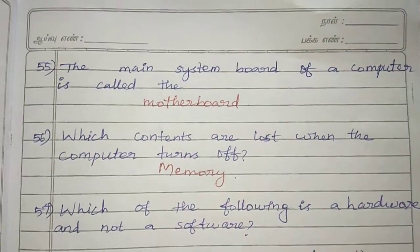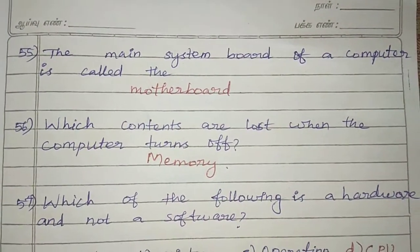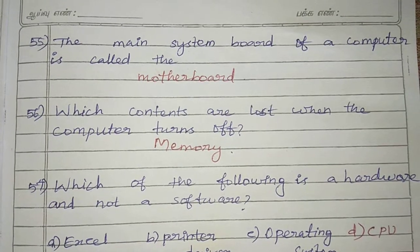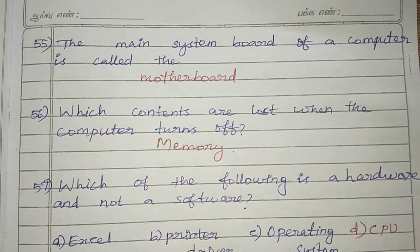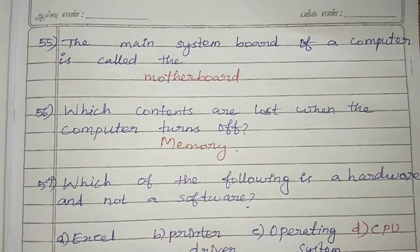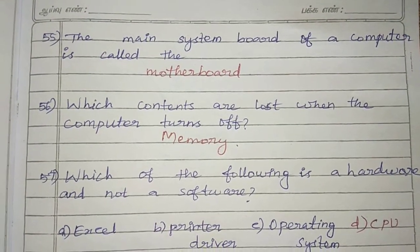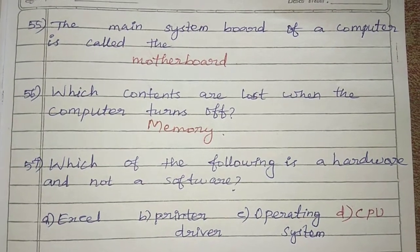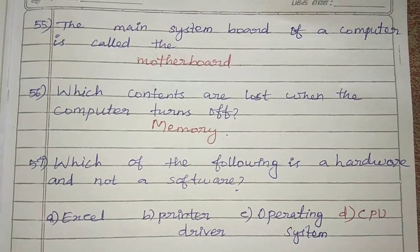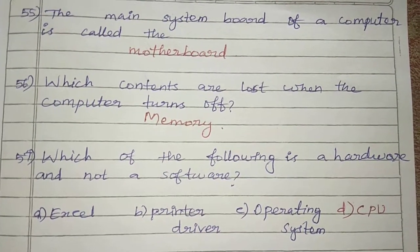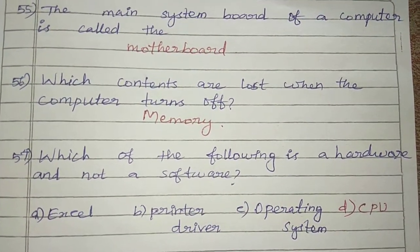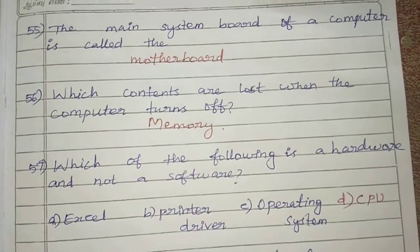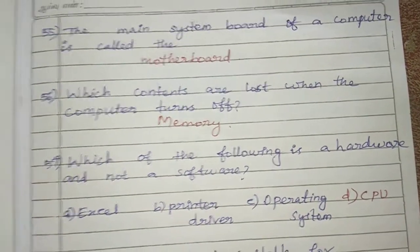Question 56: Which contents are lost when the computer turns off? Answer: Memory (RAM). Question 57: Which of the following is a hardware and not a software? Answer: CPU.